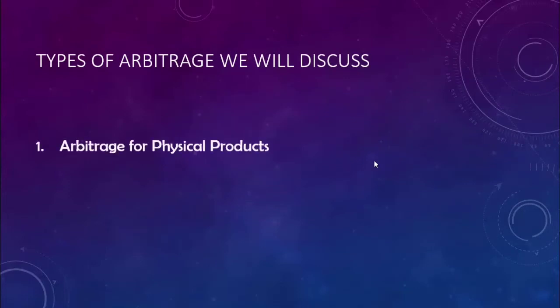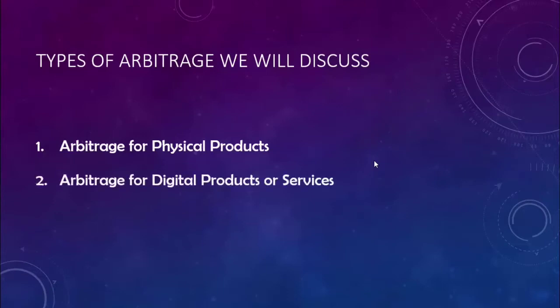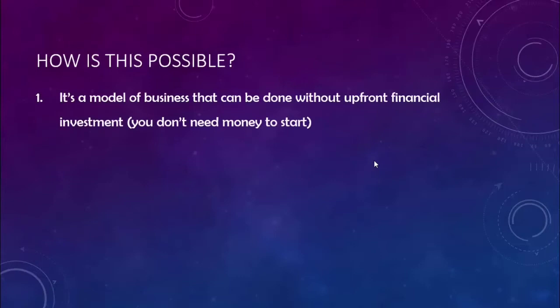In this course we'll discuss two main types of arbitrage. First, arbitrage for physical products — like the iPhone example, but applicable to any physical product. Second, arbitrage for digital products or services, a newer type that's gaining traction and can be very lucrative. Importantly, this business model can be done without upfront financial investment — you don't need money to start.